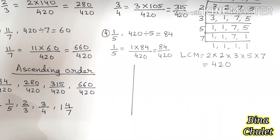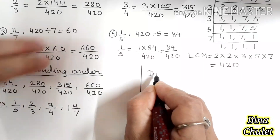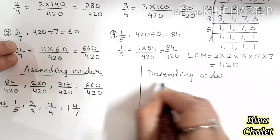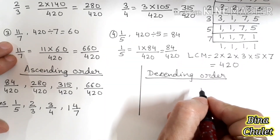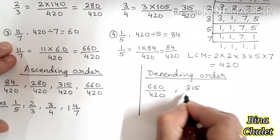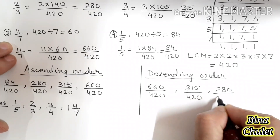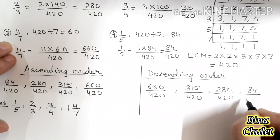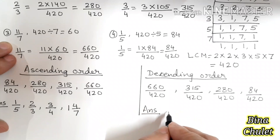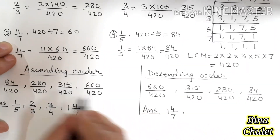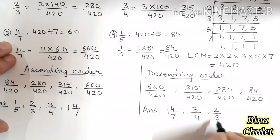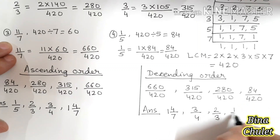If you have to arrange in descending order, do just the opposite. In descending order we need to arrange from big to small. The biggest fraction was 660 upon 420, then 315 upon 420, then 280 upon 420, and 84 upon 420. So the final answer will be 1 whole 4 upon 7, then 3 upon 4, then 2 upon 3, and finally 1 upon 5.